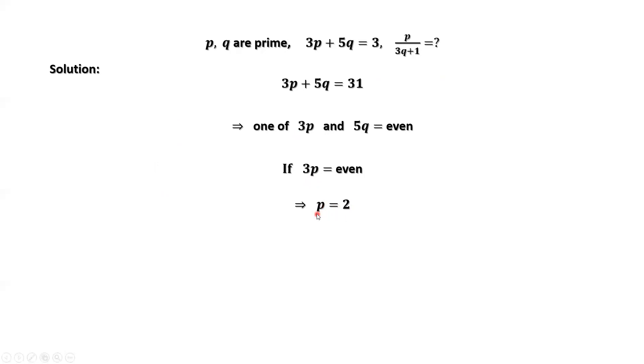If P equals 2, we replace P by 2 from the given condition. 3 times 2 plus 5 times Q equals 31. Solve this equation for Q. We have Q equals 5. P equals 2, Q equals 5.